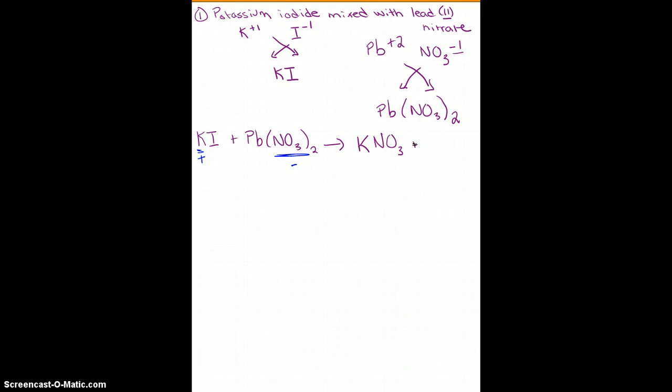Now taking a look at the other ones, I need to look at my positive ion from my second compound combining with my negative ion from my first compound. So I'm looking at my lead and my iodide combining. I always want to write my positive ion first, so I'm going to write my lead, and then my iodide gets written second. Looking at my charges here, my charge on my lead is plus 2, so that tells me I need two iodides. And then looking at my iodide, it has a charge of minus 1, so I just need one lead.